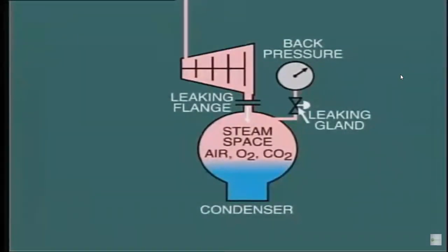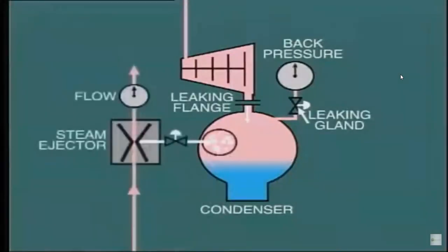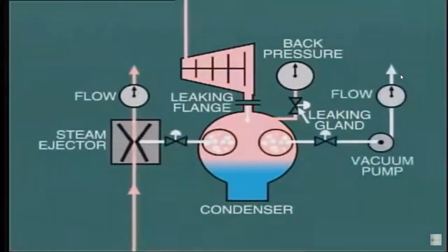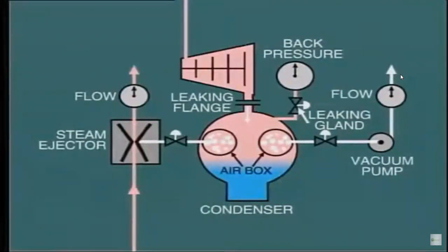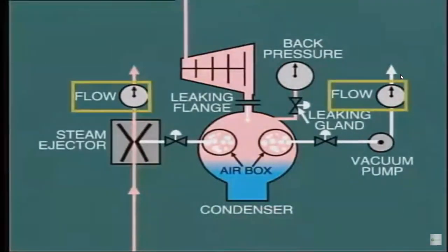In order to remove air and gases from the steam space, vacuum devices are fitted such as a steam ejector and a vacuum pump. This air removal equipment is connected to a specific location in the condenser known as the air box. In this area, additional cooling tubes are concentrated to ensure that the steam condenses and only air and gases are removed. In many plants, the discharge from the vacuum equipment is monitored to provide a measure of air leakage into the condenser. During normal operation, this air leakage should be quite small.